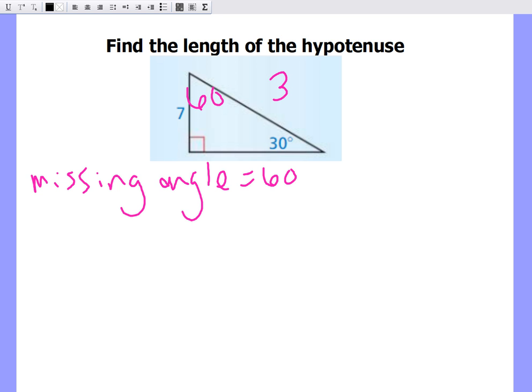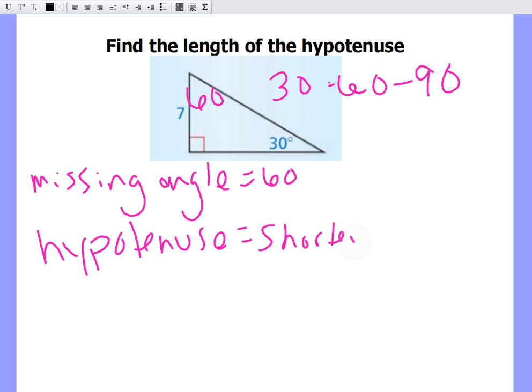So thus I'm concluding we now have a 30, 60, 90 special right triangle. It's at this time that I'm going to say that our hypotenuse can be found by taking my shorter leg times the square root of 3. Thus my conclusion is that the hypotenuse is going to equal 7 times the square root of 3. That is my first problem complete.